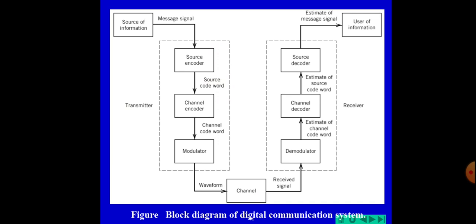Next is the channel encoder. Errors may be introduced in the symbols and codewords, so channel coding is done to avoid these errors. Channel coding is used to avoid errors introduced in the symbols or codewords. The channel encoder adds some redundant binary bits to the output of the source encoder. These extra bits help the receiver to detect and correct errors.